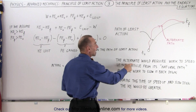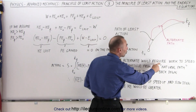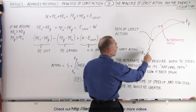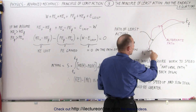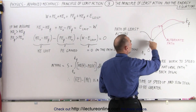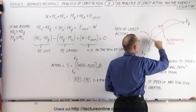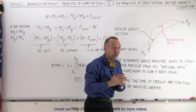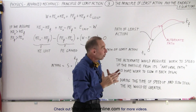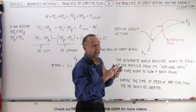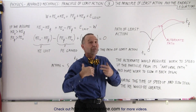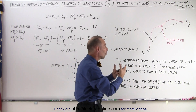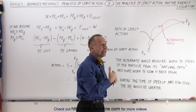The alternate path would require work to speed the particle up, because if it takes the same amount of time to go along the red path compared to along the black path here, since the red path is longer, you would need to go faster. In order to go faster, you would have to put in some work to make it go faster.